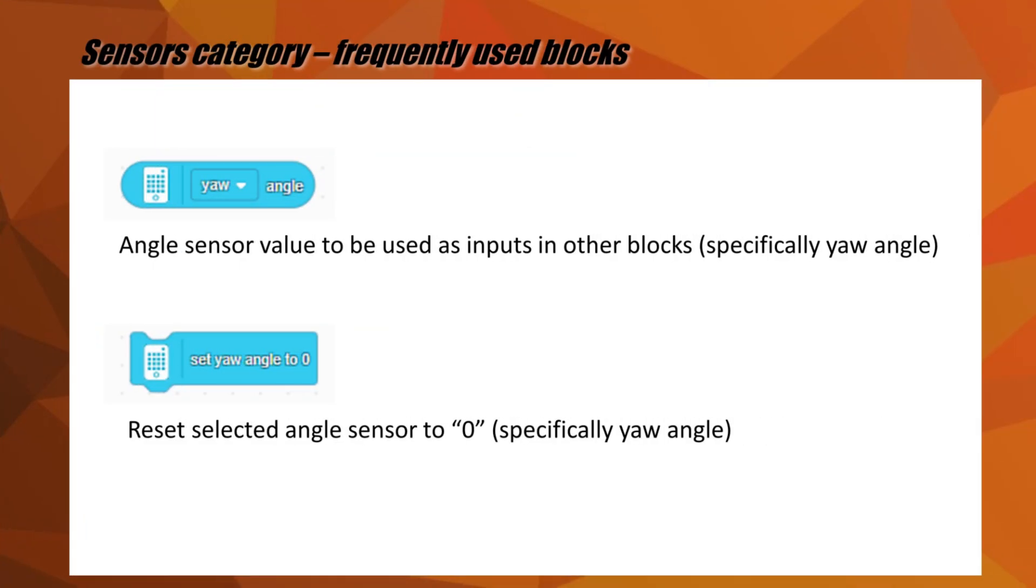The aqua blue blocks make up the sensors category. Although we have a color sensor on our robot, we rarely use it. Instead, we heavily rely on the built-in gyro sensor in the Spike Prime brick. The two most useful blocks for First LEGO League from the sensors category are probably the blocks that use the angle sensor value as an input for other blocks, as well as the blocks for resetting the angle sensor to zero.